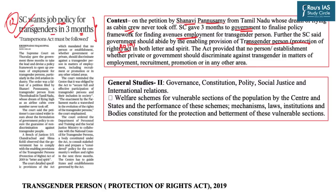The core theme of that particular act was that no person or establishment, whether private or government — and this is important, it applies to both private and government — should discriminate against transgenders in matters of employment, recruitment, promotion, or in any other area. So today we will discuss some important provisions of the Transgender Persons Protection of Rights Act 2019.